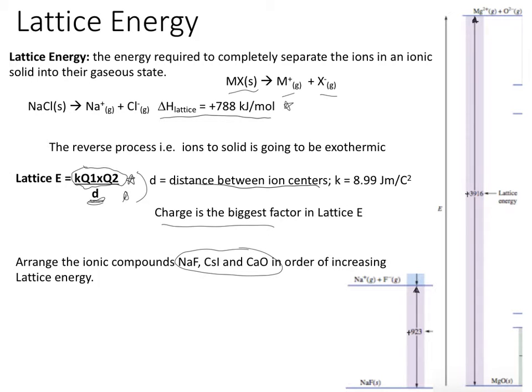When we're looking at this, the first thing we want to consider are the various charges of each of the ions. We know that our sodium is plus one, our fluorine is minus one, our cesium is plus one, our iodide is minus one, our calcium is plus two, and our oxygen is minus two. So based on the statement here that charge is the biggest factor when considering lattice energy, we know that calcium oxide has the largest charges, so we assume that the lattice energy is going to be greatest in that ionic solid.